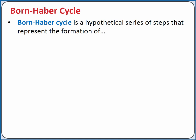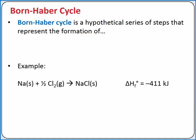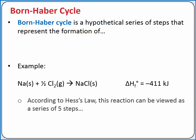The Born-Haber cycle is a hypothetical series of steps that represent the formation of an ionic compound from its constituent elements in their standard states. For example, we'll look at the formation of solid sodium chloride from solid sodium and chlorine gas. The standard enthalpy of formation of solid sodium chloride is negative 411 kilojoules. According to Hess's law, this reaction can be viewed as a series of five steps.